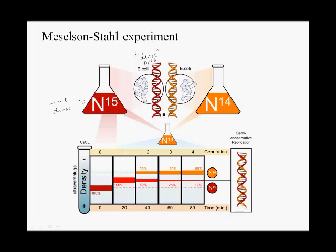Then they take these cells that have dense DNA and transfer them quickly to medium containing only normal nitrogen-14. Nitrogen-14 is lighter than nitrogen-15. When the cells now replicate their DNA in medium containing nitrogen-14, the newly replicated DNA will contain nitrogen-14.